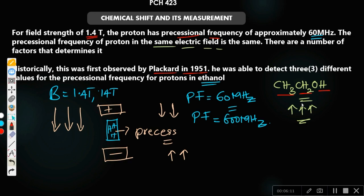He discovered that these three different values depend on the chemical environment of each proton. Although they are all protons of the same compound, they have different chemical environments. When we talk about chemical environment, we are talking about what is close to each proton. The CH₃ proton has CH₂ close to it, while the CH₂ proton has OH and CH₃ close to it — so they are in different chemical environments.